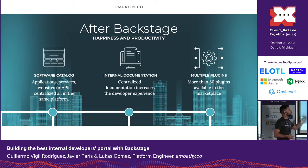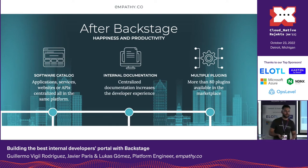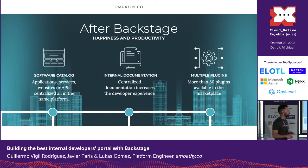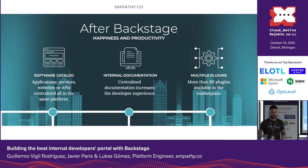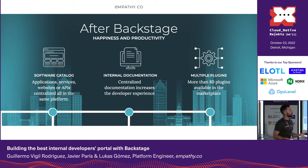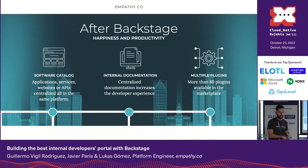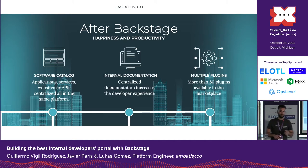The first important improvement was the software catalog. Backstage provides a catalog where you can have all your applications, services, and APIs centralized in the same platform. For newcomers to the company, it's really easy to find anything you're working on. The same goes for documentation — all centralized alongside your project and your code, so it's just one place and you find everything.